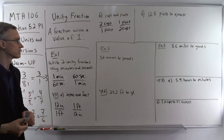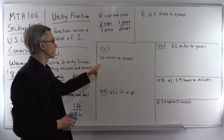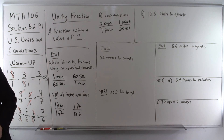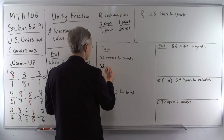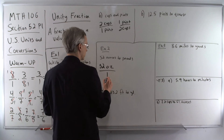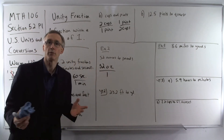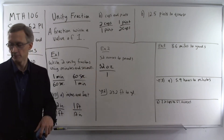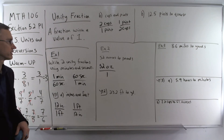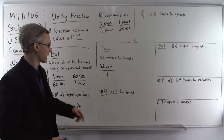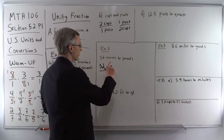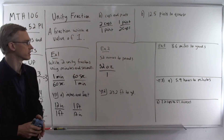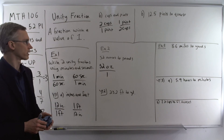Now we're going to use these unity fractions to convert units. First example: we're going to convert 52 ounces into pounds. Step one, take the given quantity — 52 ounces — and write it as a fraction over 1. We can do that because any number can be written over 1 without changing the value. Now, if the given quantity is a rate, we'd include units in the denominator, but here we're just writing over 1 without units there.